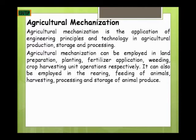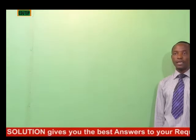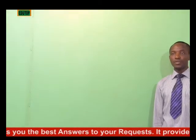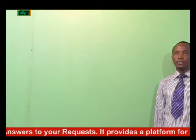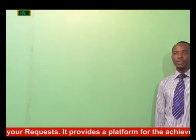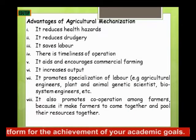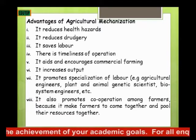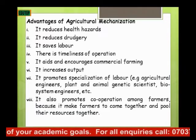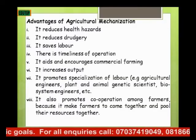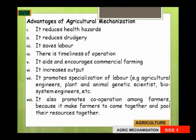Agricultural mechanization can also be employed in the rearing and feeding of animals, harvesting of animals, and processing and storage of animal produce. It therefore applies to the production, processing, and storage of agricultural produce in general. The first advantage of agricultural mechanization is that it reduces health hazards and drudgery, making work less tedious.